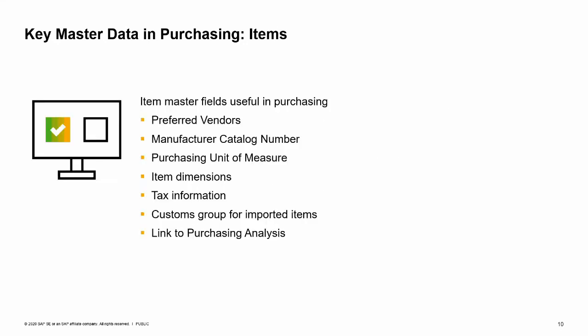Another key piece of master data in the purchasing process is item master data. Item master data identifies what is being purchased. Frequently the same items are purchased, inventoried, and sold. The information is the same — it is just used differently.